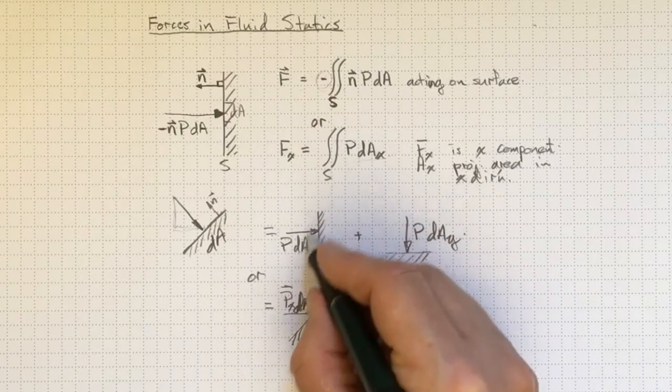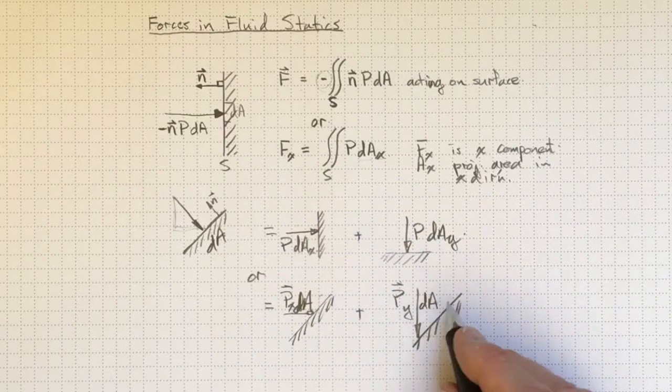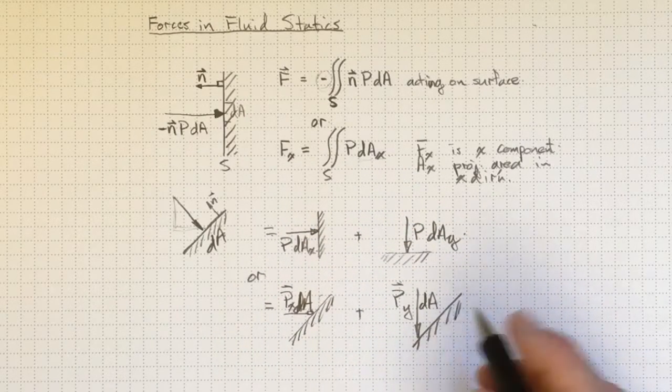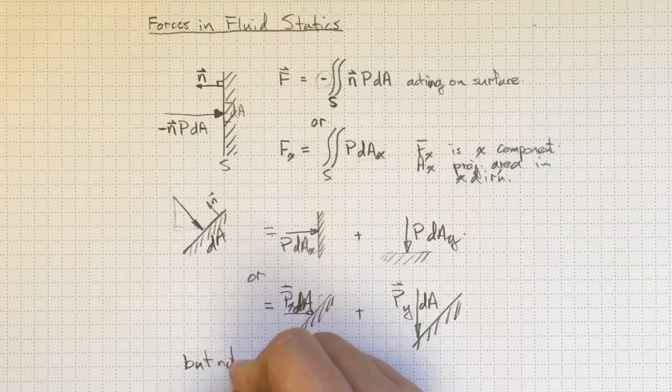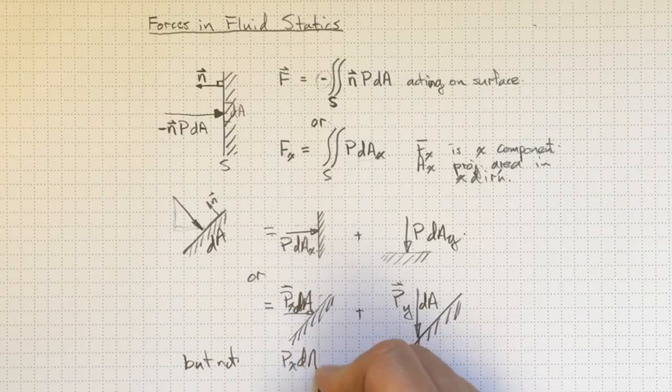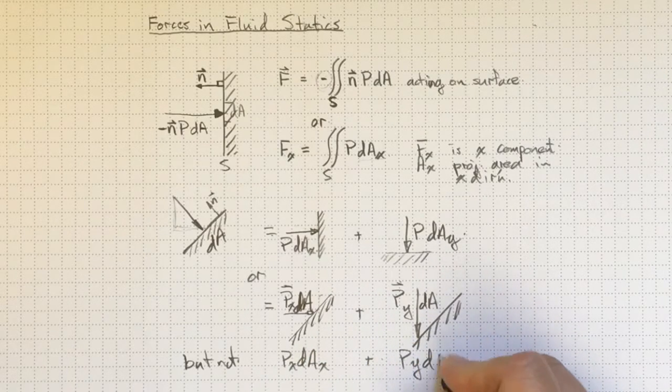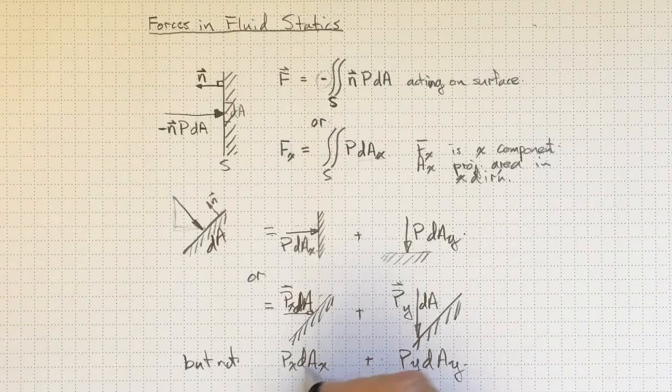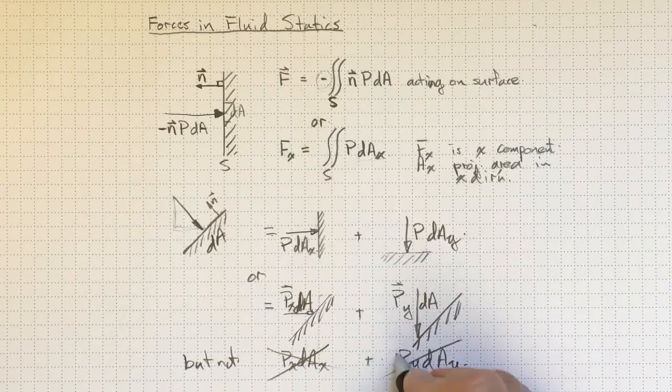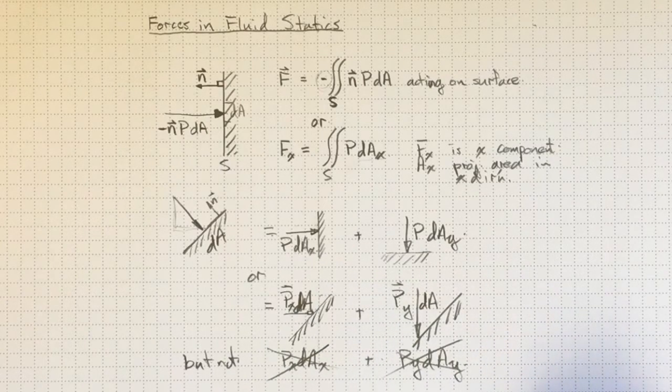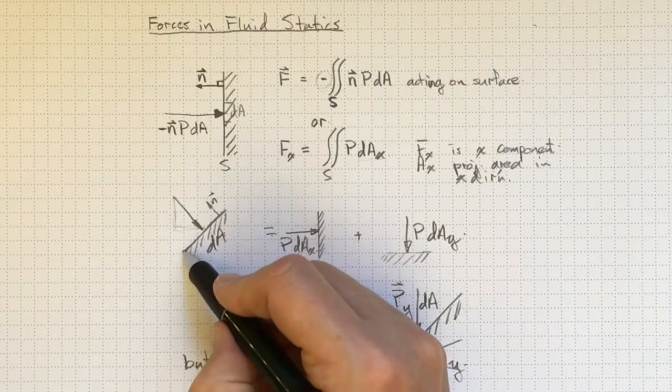I'm taking the component either of the area projection, or I'm projecting the pressure, but not projected pressure times the projected area, because that way I would be taking the projection twice. I'd get my geometry wrong. So the simplest way to manage this is look at it in this sense.